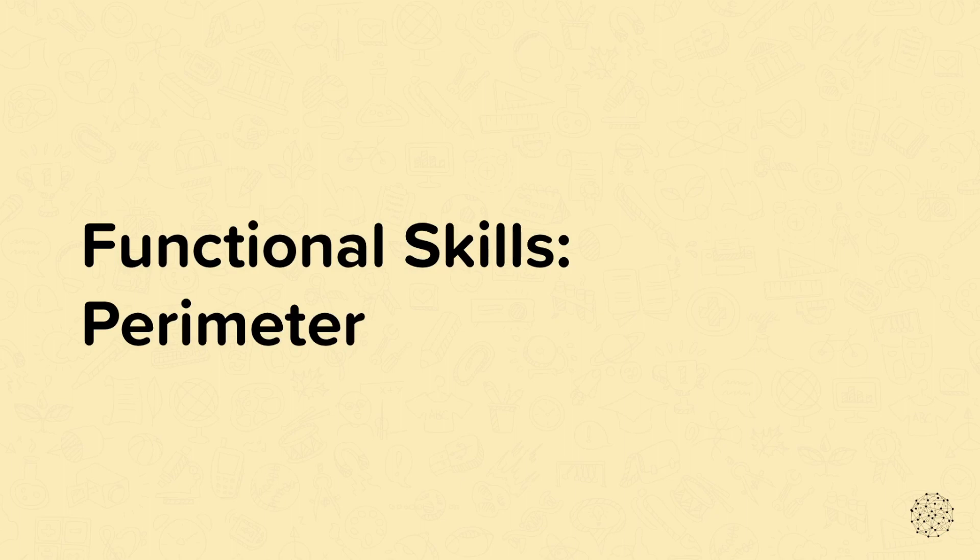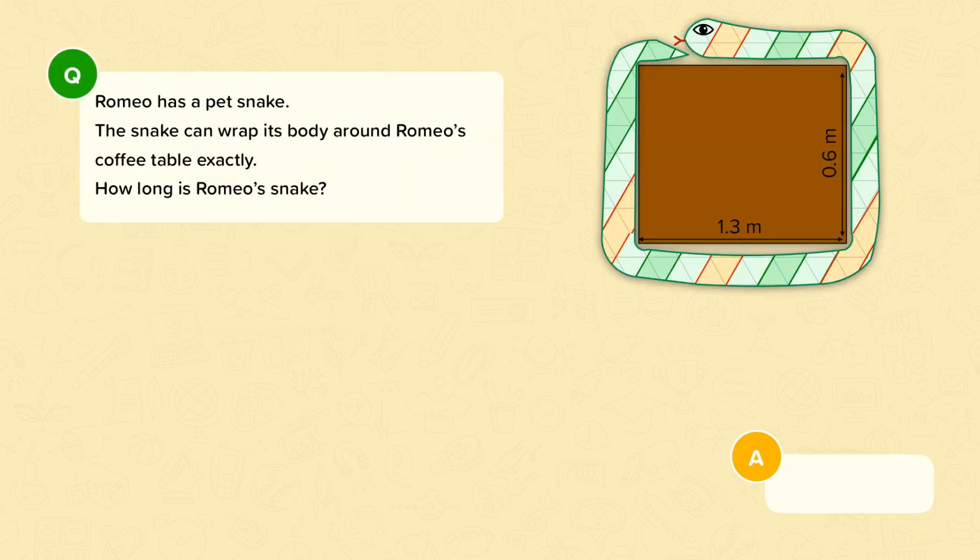Functional skills. Perimeter. The first thing to remember is that perimeter is a word for the distance around the edge of a shape. In this video we will be looking at examples where we have to work out perimeters in a functional context.